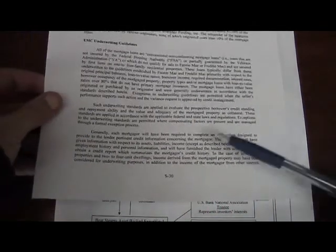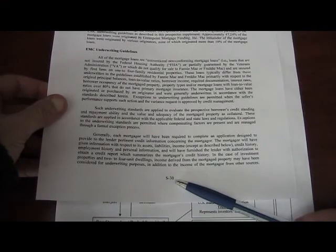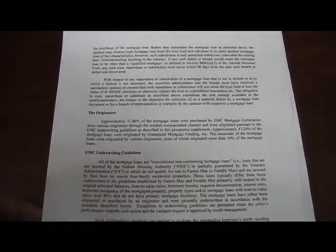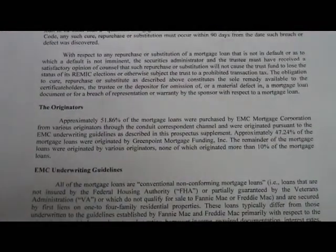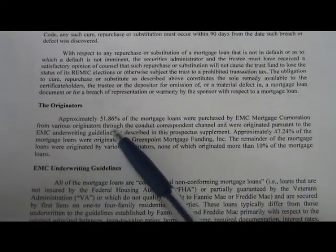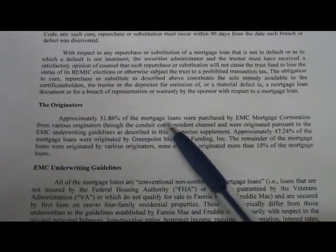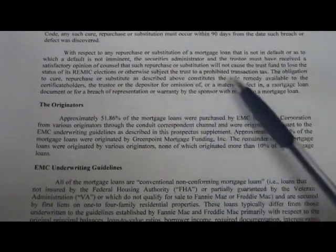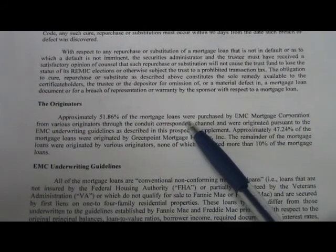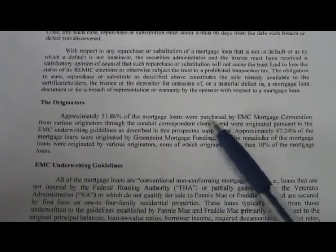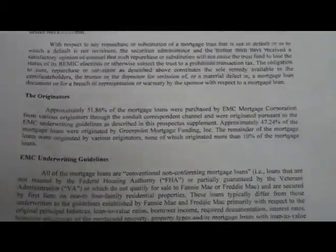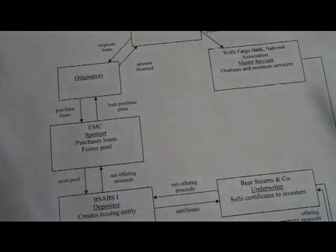Let's just go to real quick here. This is page S30. It kind of explains what's going on here with these originators. Approximately 51.86% of the mortgage loans in this actual half a billion dollar ABS, asset-backed security pool, according to this, were purchased by EMC Mortgage Corporation. These guys put up a bunch of money. I'm going to explain where they got that.